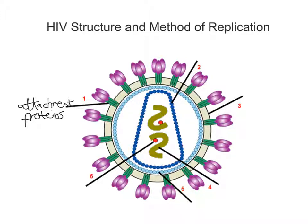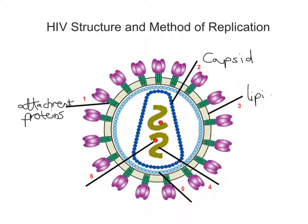Number two in this diagram represents what's called the capsid. Number three is a lipid envelope — lipid being another word for fat — it's like a fatty envelope surrounding this particular virus. During the process of replication, we'll get to see where this envelope comes from.